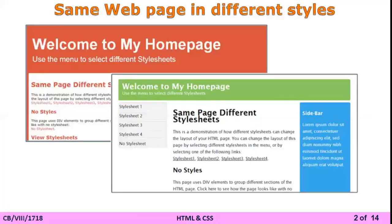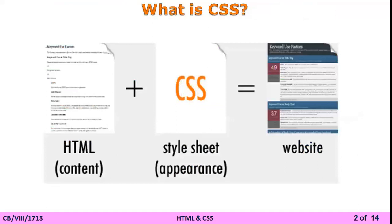The first question is: why do we use CSS when we are already using HTML for designing web pages? The answer is that HTML is basically the body or content of the web page, but CSS is the appearance of the web page. CSS is a style sheet which is used for the appearance of the web page, and HTML is the content.